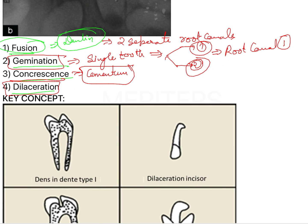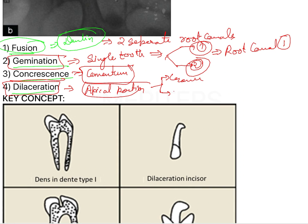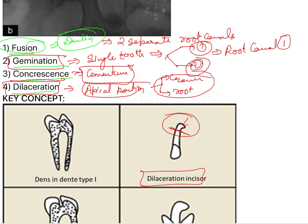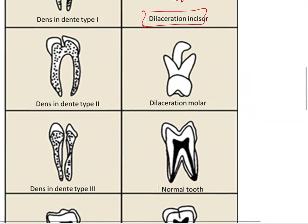Dilaceration is an anomaly where a portion — sometimes the apical portion, sometimes the crown — bends out. The crown can be bent or a portion of the root can be bent. Do not get confused by the terminology; there has to be an actual bending. In the incisor you can appreciate the bending of the root, or we can say the whole tooth is bent. There should not be any confusion about this.